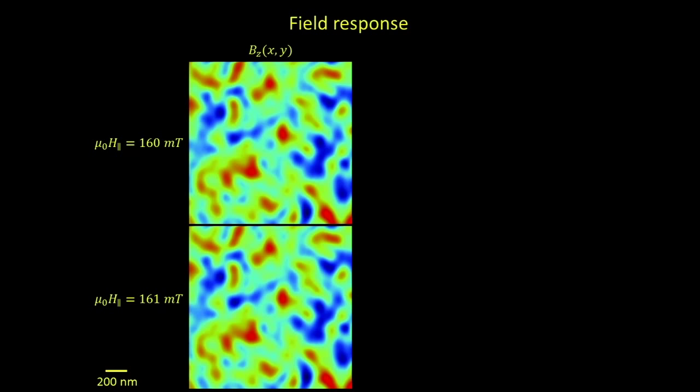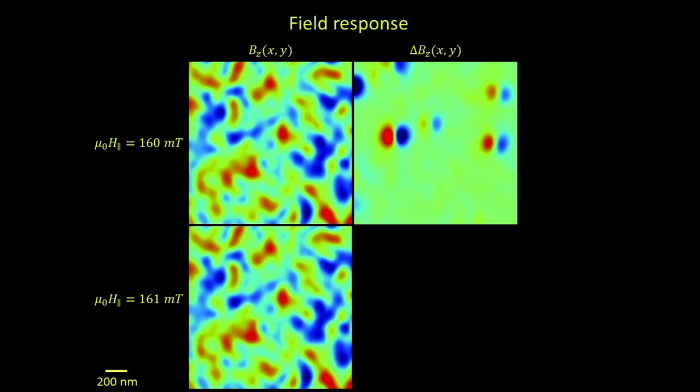It seems like there are about four or five little magnets that flipped between these two images. Looking at the scales, this is 3.5 milli-tesla whereas the change is about an order of magnitude less — very subtle changes happening between these two images.